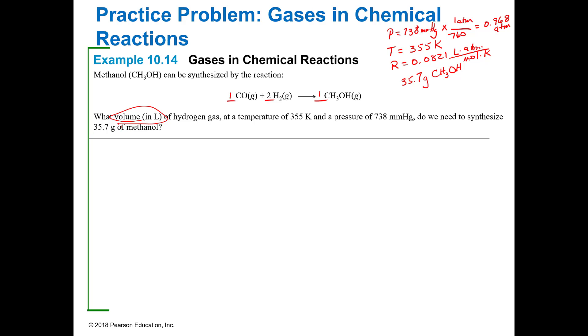I need to know how many moles that is, because these are going to be reacting in molar ratios. 35.7 grams of CH3OH. I need to know what the molar mass of that is. I've got 12 plus 3 plus 16 plus 1, that gives me 32. So one mole is 32 grams. That means I have 35.7 divided by 32, which is 1.16 moles of CH3OH.